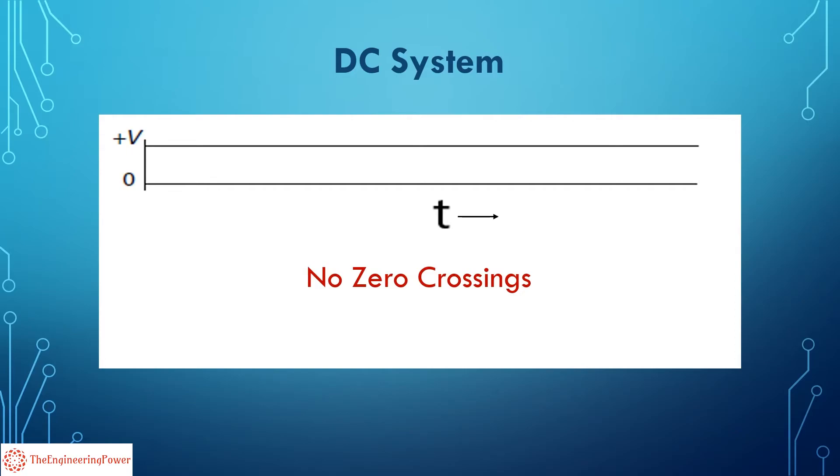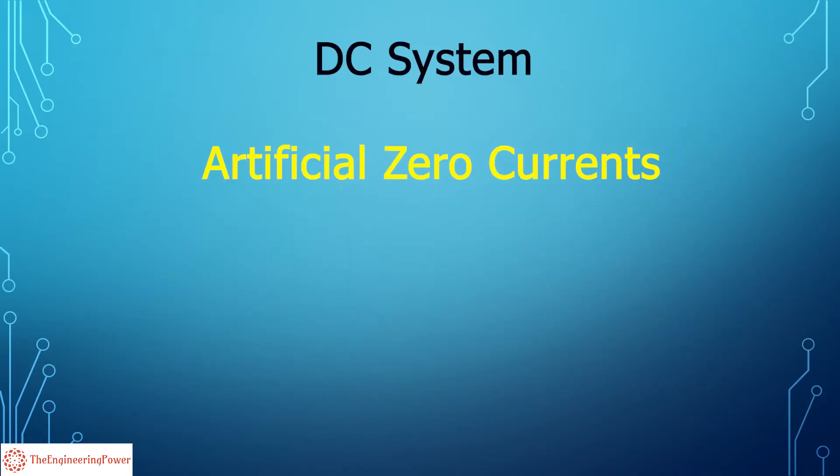So in order to extinguish the arc, artificial zero currents are introduced in the system using particular circuitry. So the HVDC breaker modeling is very complex as compared to HVAC breaker. Hence, the cost of HVDC breaker is very high as compared to the HVAC breaker.